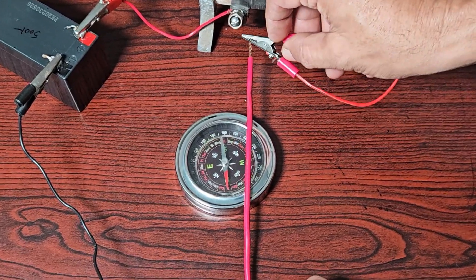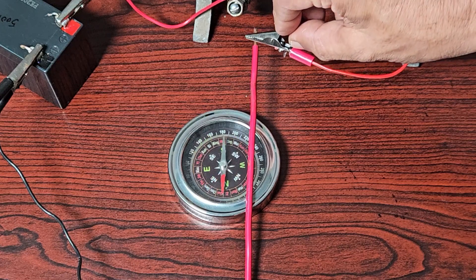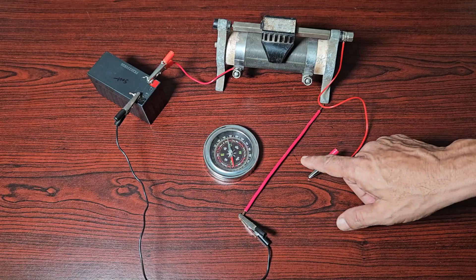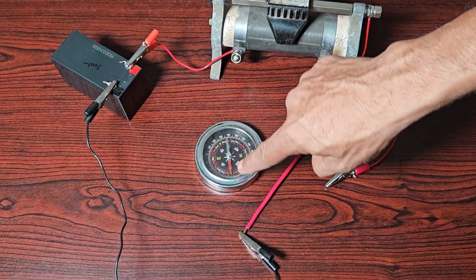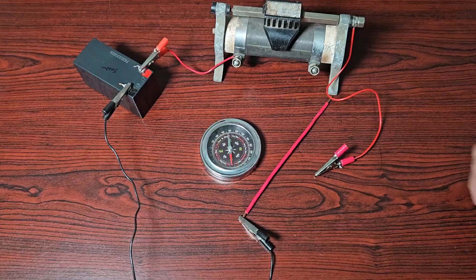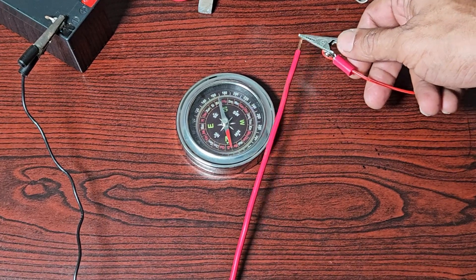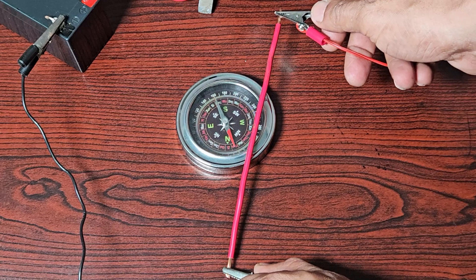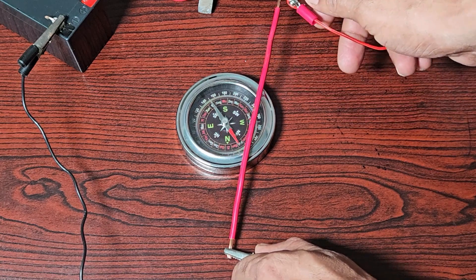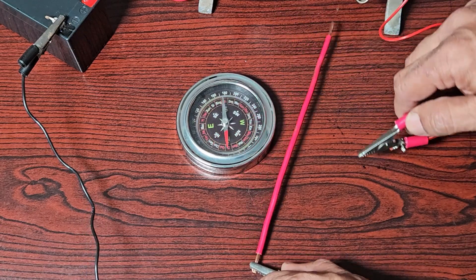he noticed that when a current carrying wire is brought near a magnetic needle, the needle deflects. In absence of electric wire, the needle comes back to its alignment in Earth's north-south direction. Intrigued by this observation, Ørsted performed more experiments and he established that electric current produces magnetic field, the basic fact of nature.